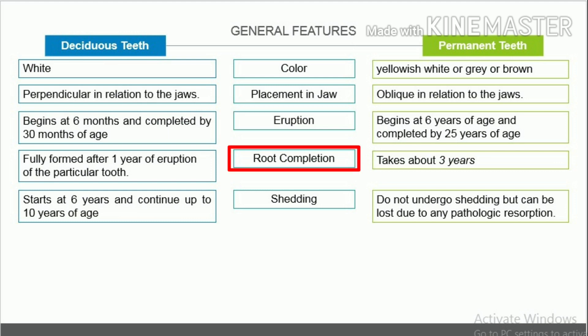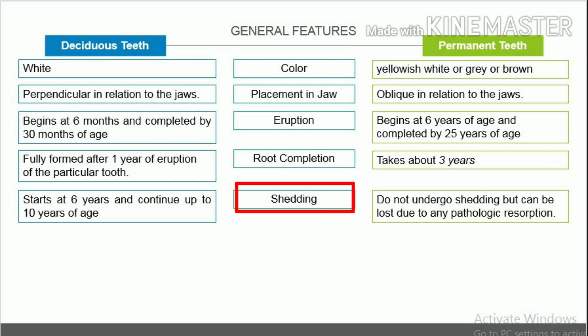Root formation. Deciduous teeth: the roots are fully formed after 1 year of eruption of the particular tooth. Permanent teeth: it takes about 3 years for the root to be completed. Shedding. Deciduous teeth start exfoliating from the oral cavity by around 6 years of age and continue up to 10 years of age as a result of physiologic resorption of the root. Permanent teeth do not undergo shedding but can be lost due to pathologic resorption.